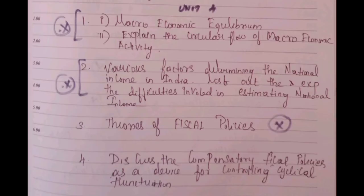Unit 4: Macroeconomic Equilibrium. The first question is very important. Fiscal policy is very important. Question 10: Various factors determining national income in India. Question 11: List out and explain the difficulties involved in estimating national income in India.